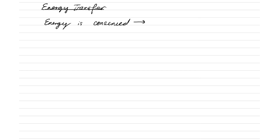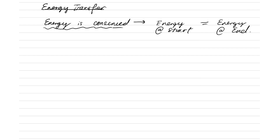The very first principle in understanding energy is that energy is always conserved. What does this mean? Energy being conserved simply means whatever energy you have at the beginning must be exactly the same as whatever energy you have at the end. And energy is always conserved.